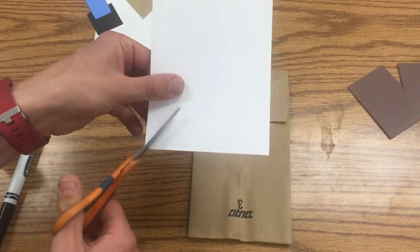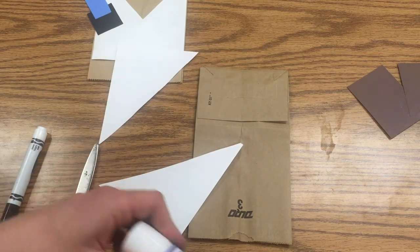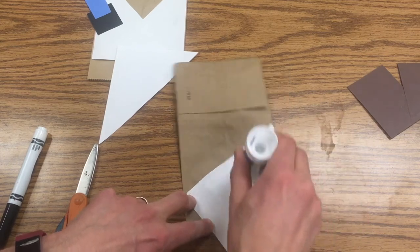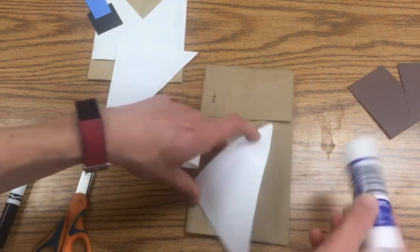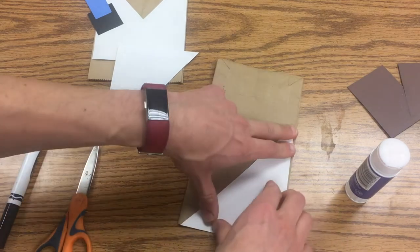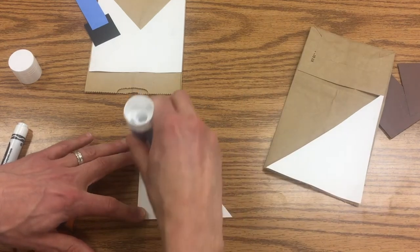Then you take this, turn it over, put the glue all the way around, and same thing on the other side.